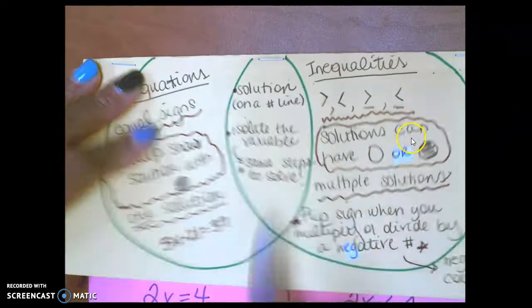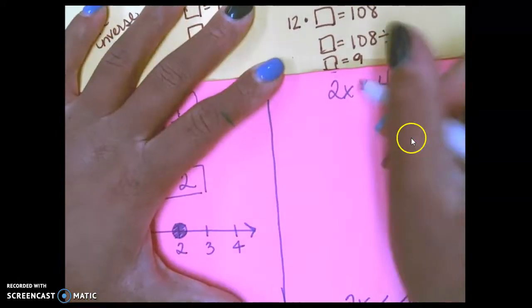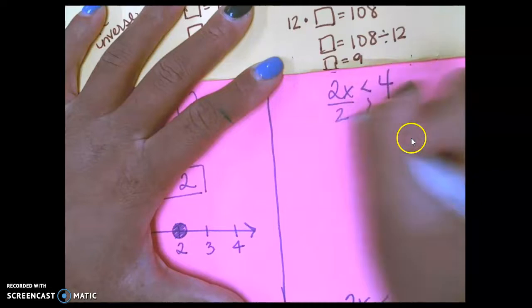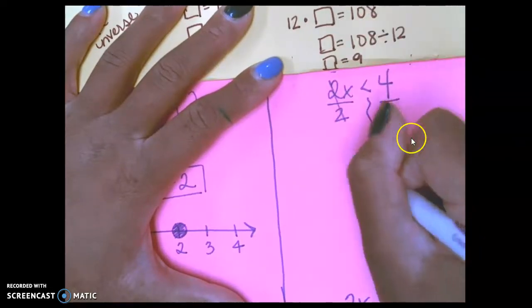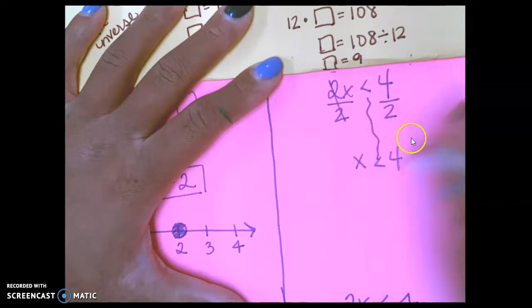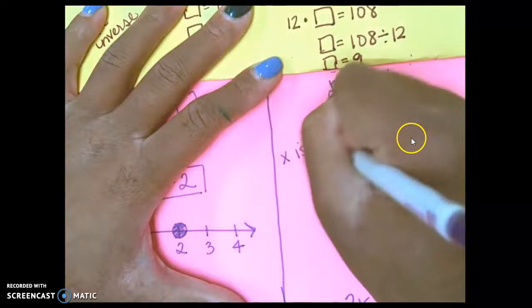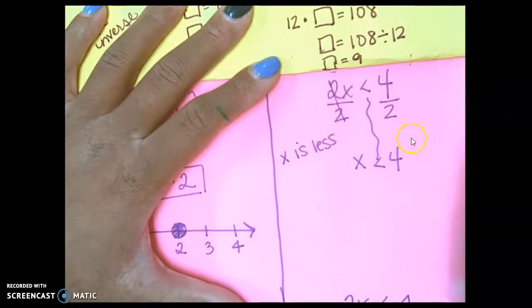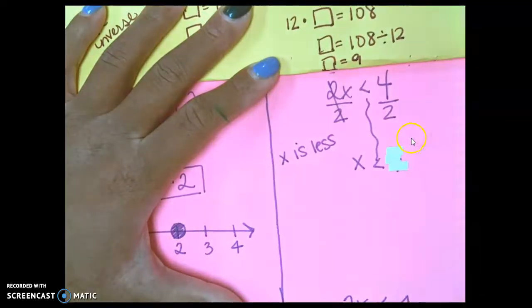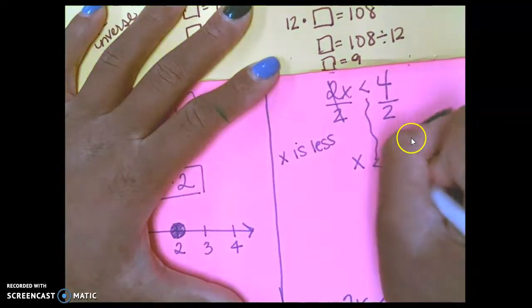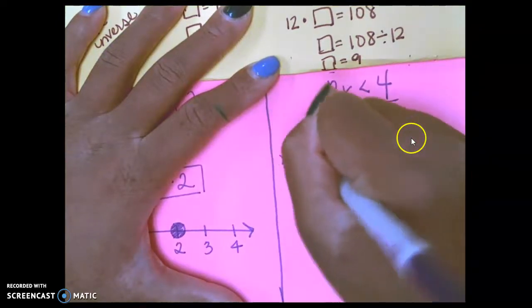Same steps to solve. So, the only thing that's different over here is the symbol and how it's going to look as a solution. Draw your river. Divide both sides by 2. These 2's cancel out. X is less than 4. Write that down. X is less than... Oops, I made a mistake. This should not be 4. It should be 2. I was wondering what this was wrong. Again, don't mind my whiteout. Make this a 2. So, X is less than 2.